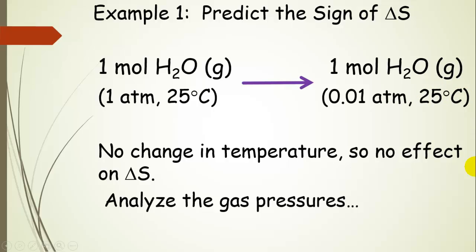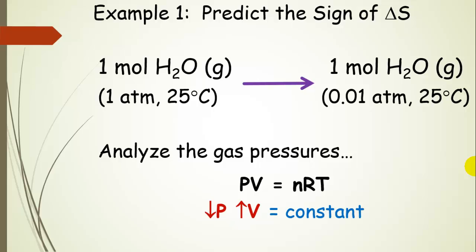The first thing to keep in mind is that there was no change in temperature, so there's no effect on the change in entropy from temperature. So now we need to look at the gas pressures and think about what that means. Reminding ourselves of the ideal gas law, where PV equals nRT, when we decrease the pressure, what happens to the volume?